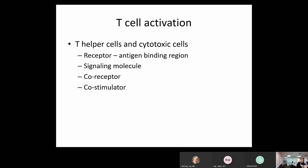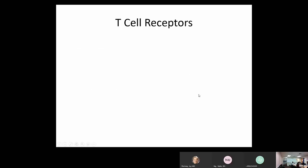For T cells to act, they use their receptors — T cell receptors made by recombination of gene segments. The T cell receptors are two types: alpha-beta and gamma-delta, present on the surface of T cells. 95% of our T cells have alpha-beta TCR, and 5% have gamma-delta. These receptors are made by recombination of gene segments — DJ and VDJ recombination — similar to what occurs in B cells.